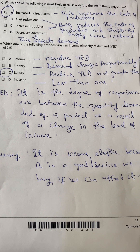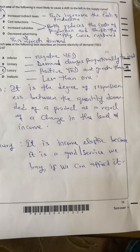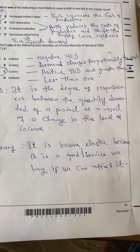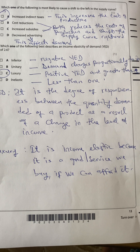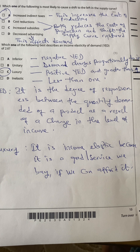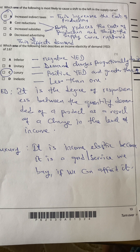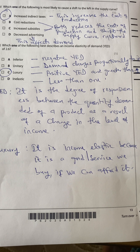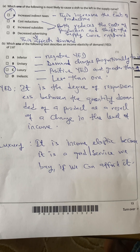Unit elastic demand changes proportionally to income and is always equal to 1. For luxury goods, YED is positive and greater than 1. Since 2.6 is greater than 1, the answer is luxury goods. For inelastic goods, YED is less than 1. So the answer is C — luxury goods.